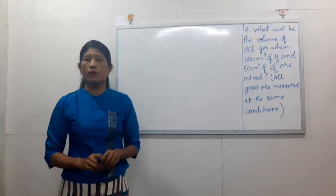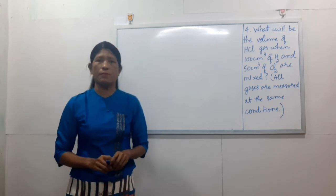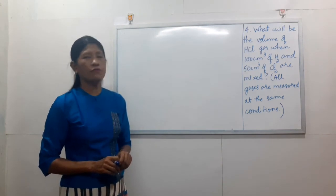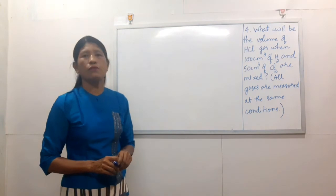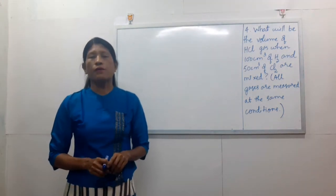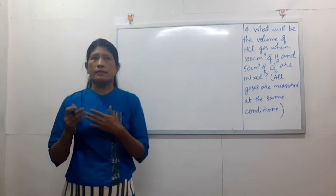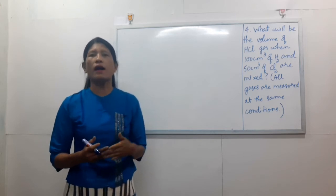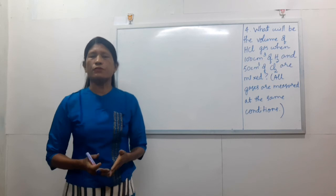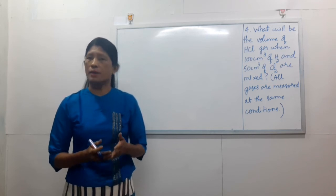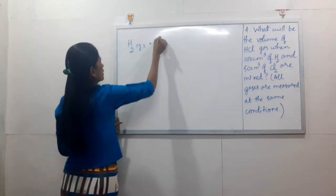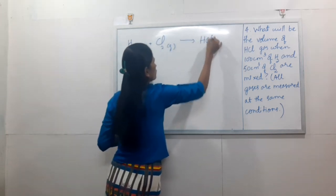Now, what will be the volume of hydrogen chloride gas? 100 cm³ of hydrogen and 50 cm³ of chlorine are mixed. All gases are measured at the same condition. What will be the solution for hydrogen chloride gas? The solution for hydrogen chloride gas is 50 cm³ of hydrogen chloride.